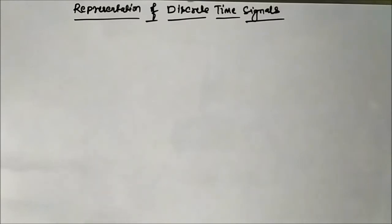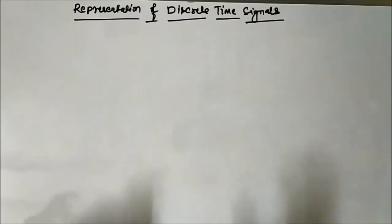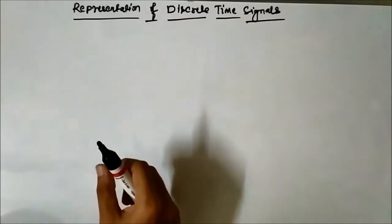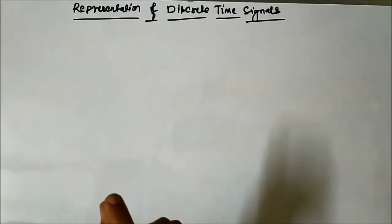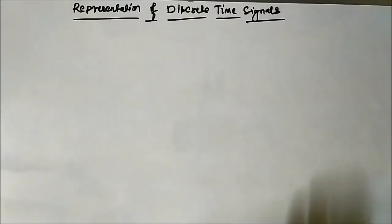In the previous video we discussed the basic introduction to signals and the distinction between continuous time signals and discrete time signals. In this video we are going to discuss the representation styles of discrete time signals. Discrete time signals are defined at specific instances of time through the sampling process following the Nyquist sampling theorem.